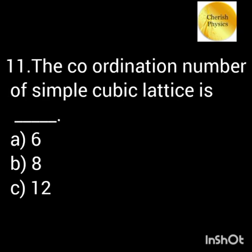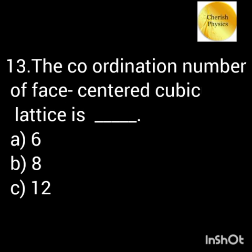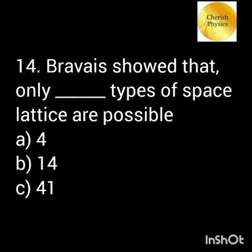The coordination number of a simple cubic lattice is 6. The coordination number of a body-centered cubic lattice is 8. Bravais showed that only 14 types of space lattices are possible.